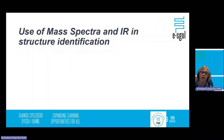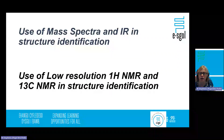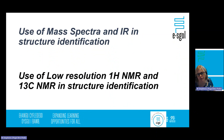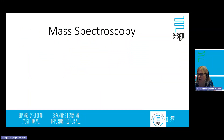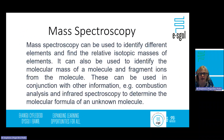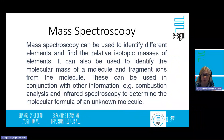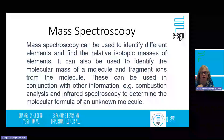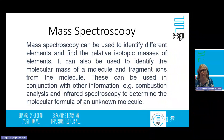We're going to be focusing on how you can use mass spectra and infrared spectroscopy in structural identification. I will also be running through how you can use NMR — both low-resolution hydrogen NMR and carbon-13 NMR — again in structural identification. These techniques can be used in conjunction with other information to determine the molecular formula of any unknown molecule, which I'll be covering later in this session.